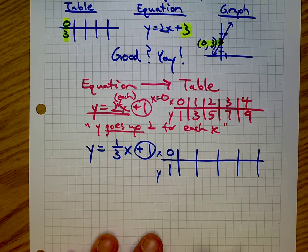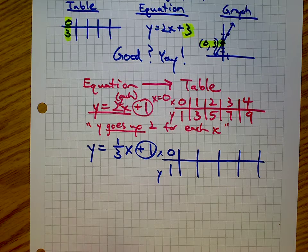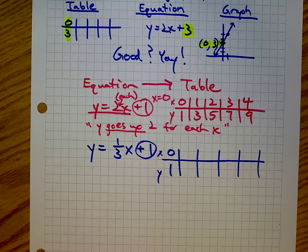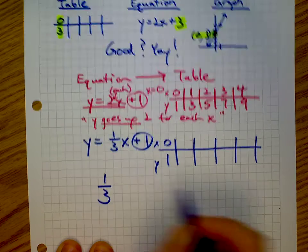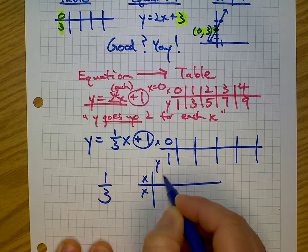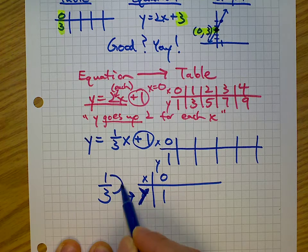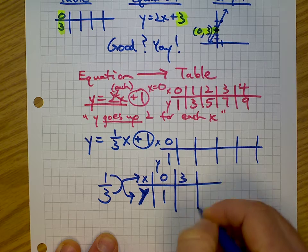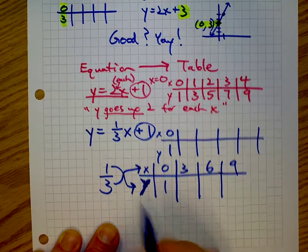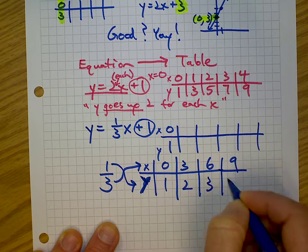All of a sudden we have an issue, because this equation says y goes up one-third for each x. So here's what we do — it's the shuffle method. I'm going to take my fraction and shuffle it into the table. I change my x's by the denominator — three — and what was on top is now below: y is changed by the numerator — one. And there we go.